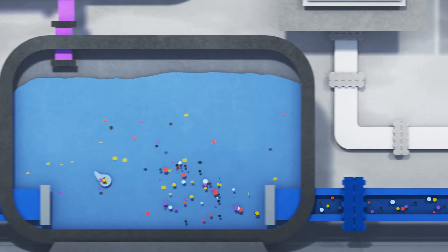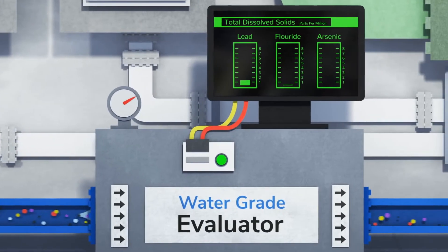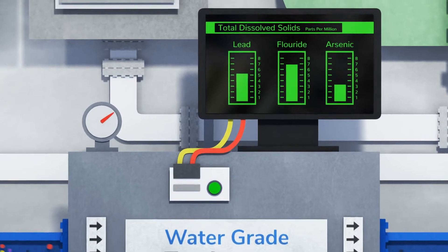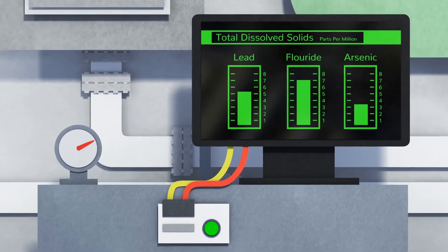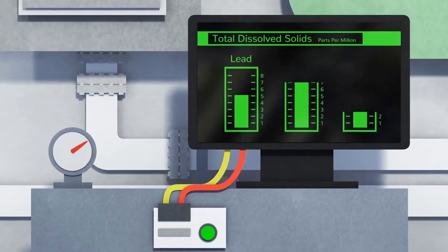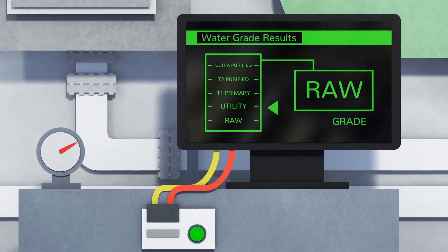We explained all of that to get to this. The treatment plant is not required by law to get the water even close to being pure. In fact, it is only one grade higher than raw, or utility grade.